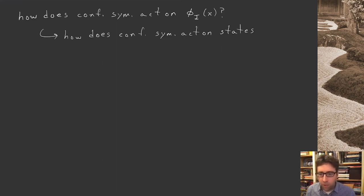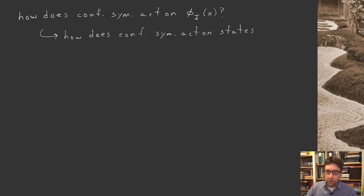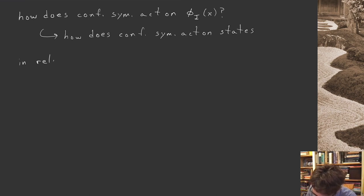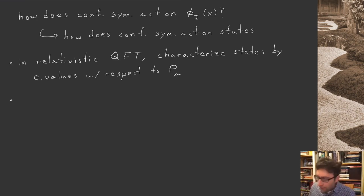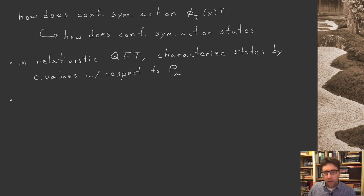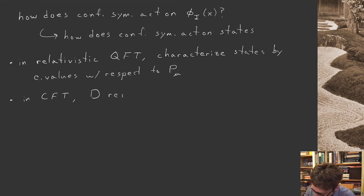From your knowledge of quantum mechanics, I'm assuming you're more comfortable with the notion of the state — like the states of a harmonic oscillator — and then building on that we'll back out how conformal symmetry must also act on the fields that create and destroy those states. So in relativistic QFT we characterize states by their eigenvalues with respect to momentum. In conformal symmetry, the momentum generators — the generators of translation — are not as special; they fail to commute with dilatations and special conformal transformations. In CFT, the dilatation operator replaces the special role of momentum in standard quantum field theory.